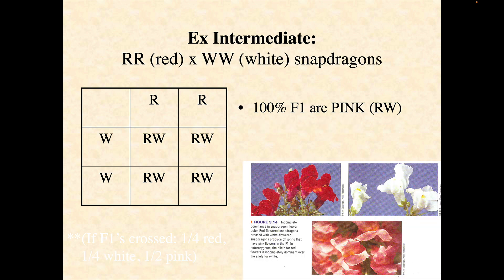With intermediate or incomplete dominance, you end up with an intermediate color. So you don't have red and white both being exhibited — you've got the blended characteristic which gives you the pink.